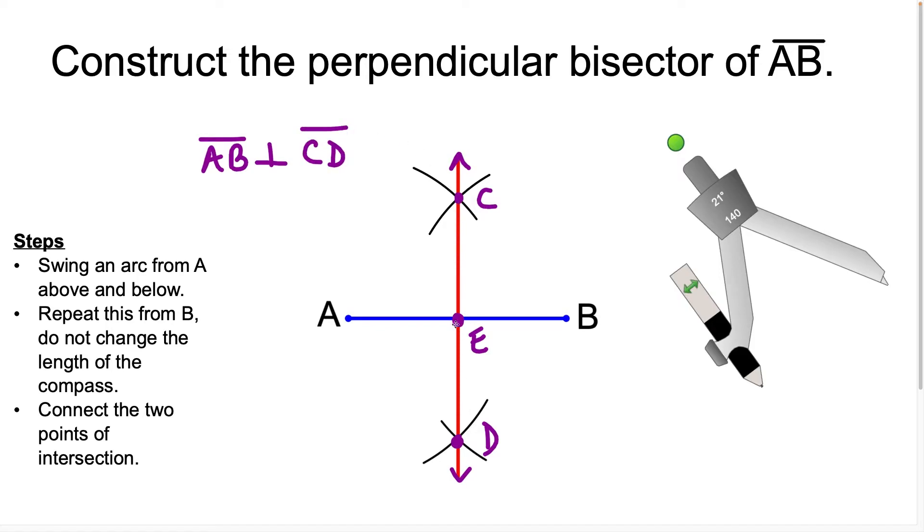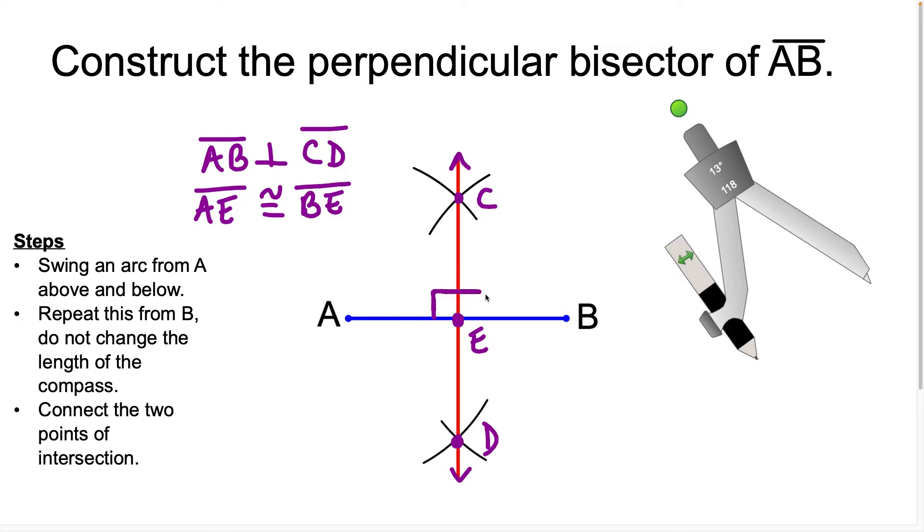And I could also say that segment AE is congruent to segment BE, because a perpendicular bisector cuts a line segment in half and it cuts it at a 90 degree angle.